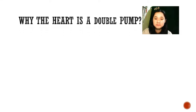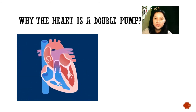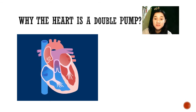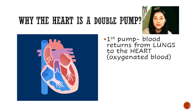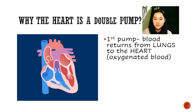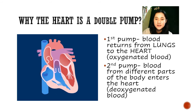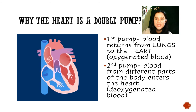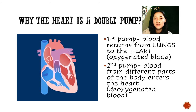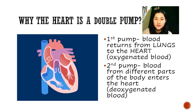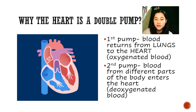Why is the heart a double pump? The left side and the right side of the heart work simultaneously, which means they work at the same time. The first pump is when blood returns from the lungs, which means it contains oxygen — it is called oxygenated blood. The second pump is when blood from different parts of the body enters the heart, meaning the blood contains a lack of oxygen, or it contains carbon dioxide, because the cells already use or utilize oxygen, and in return, carbon dioxide is loaded to the red blood cells. So it is called deoxygenated blood.